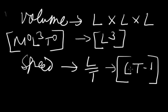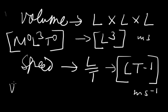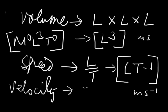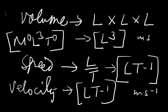With the help of dimensions, we can also write the units. For volume, dimension is L³, so the SI unit is m³. For speed, dimension is LT⁻¹, so the SI unit is meter per second, or m·s⁻¹. Similarly, velocity equals displacement divided by time, which is also LT⁻¹. So the dimensional formulas of speed and velocity are the same, and therefore their units are also the same.